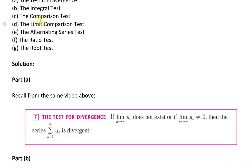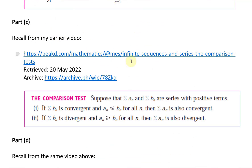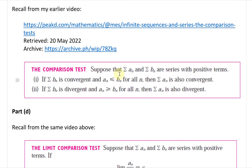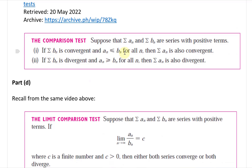Part C is the comparison test. Suppose the series summation of a_n and summation of b_n are series with positive terms. If the summation of b_n is convergent and a_n is less than or equal to b_n for all n, then the summation of a_n is also convergent. If the summation of b_n is divergent and a_n is greater than or equal to b_n for all n, then the summation of a_n is also divergent.